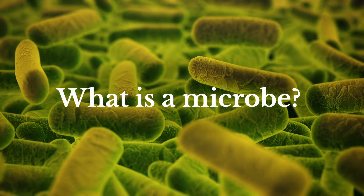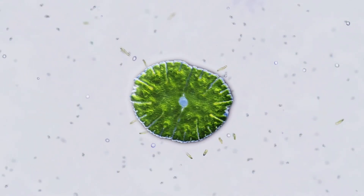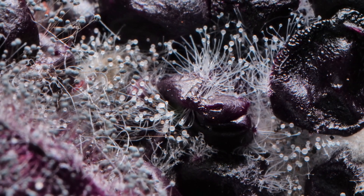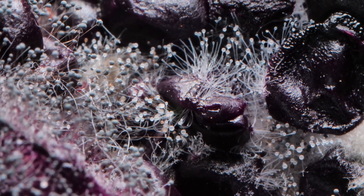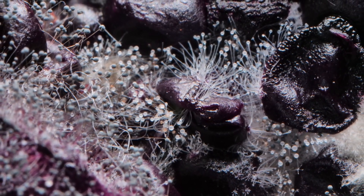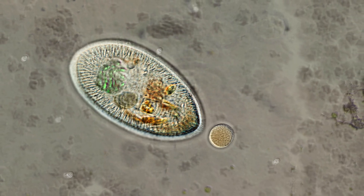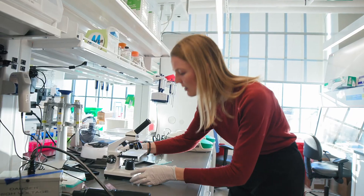What is a microbe? A microbe is a very small organism, like a bacterium or a fungus that grows all around us. Microbes are invisible, and yet we wouldn't be here without them.